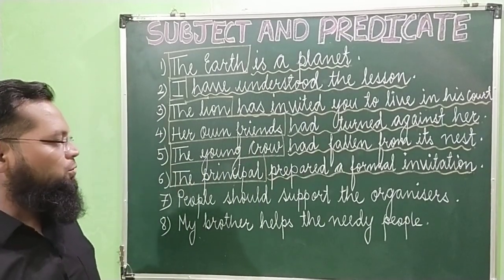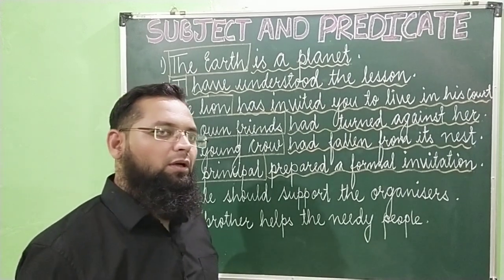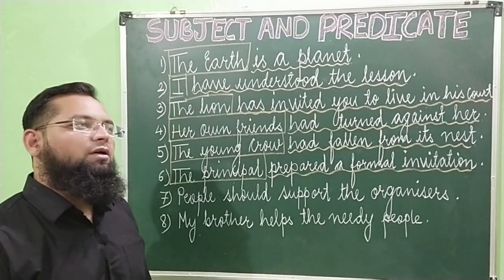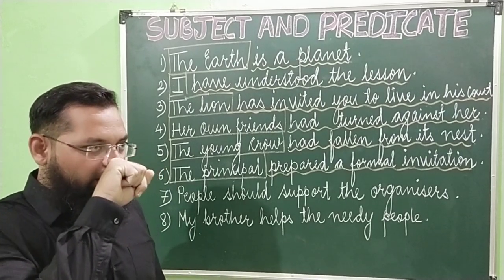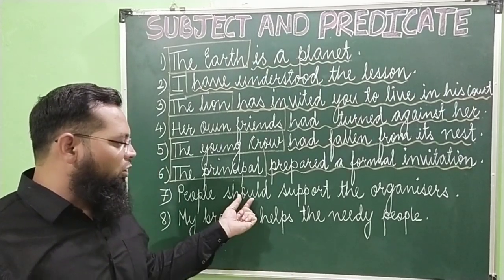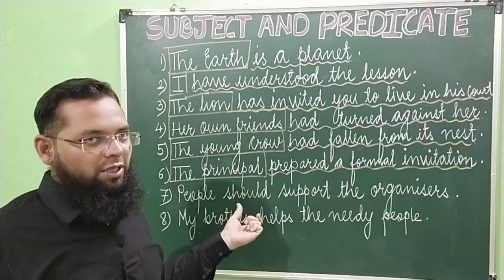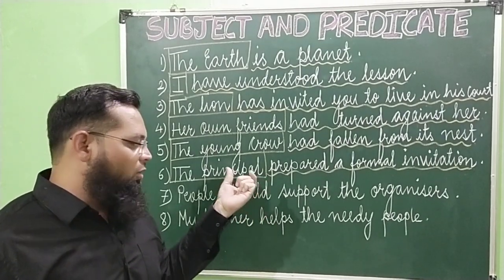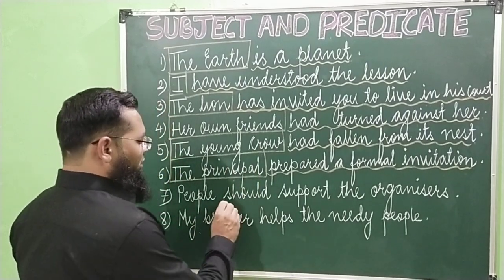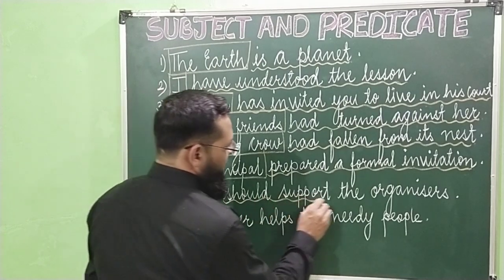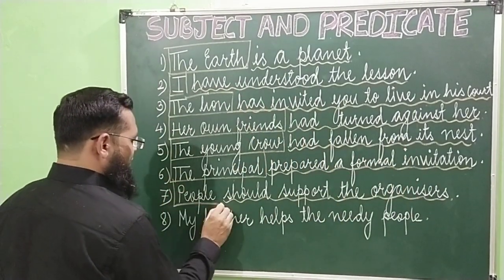Next example: 'People should support the organizers.' What is the helping verb here? The helping verb is given in the form of a modal auxiliary — 'should.' A modal auxiliary also acts as a helping verb. So our predicate will begin from 'should,' and the subject will be 'people.'